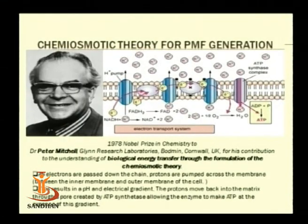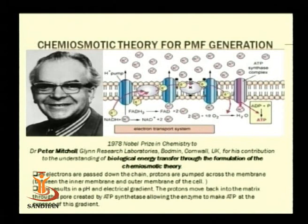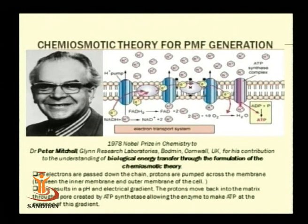This way, energy generation takes place. To understand this complex mechanism, three hypotheses were put forward: chemical coupling, conformational coupling, and the chemiosmotic hypothesis. The most acceptable hypothesis is the chemiosmotic hypothesis, which was given by Peter Mitchell — and that is why he was awarded the Nobel Prize in Chemistry in 1978.